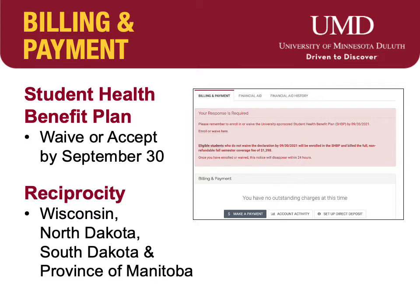If you do not have insurance, you need to enroll in the plan for an additional semester health insurance charge of $1,398. The second message is: if you are a resident of Wisconsin, North Dakota, South Dakota, or the Province of Manitoba, and have not completed the reciprocity application for your state or province, there will be a message highlighted in brown to complete the reciprocity so that you can receive in-state tuition.